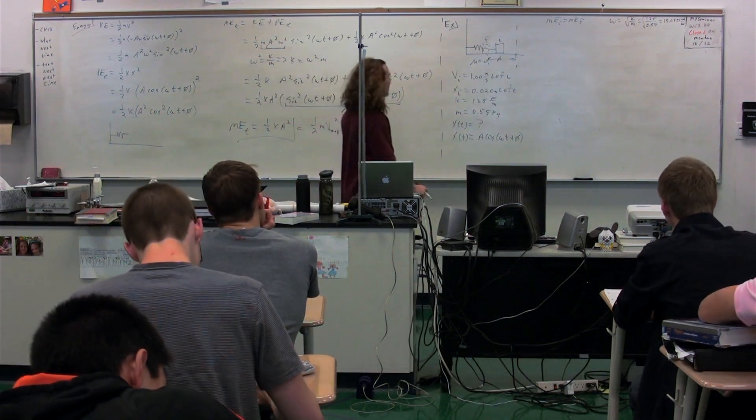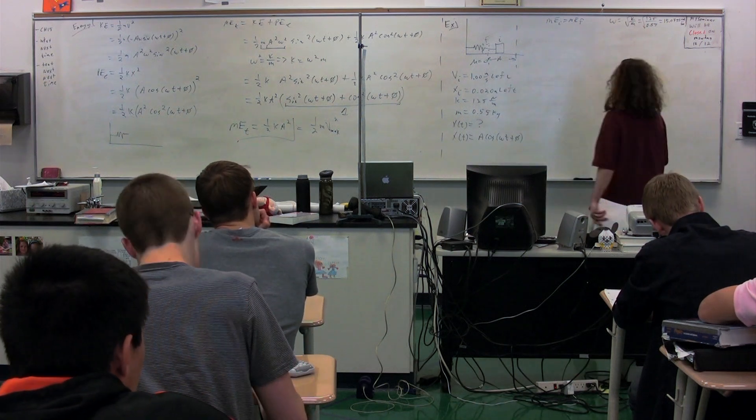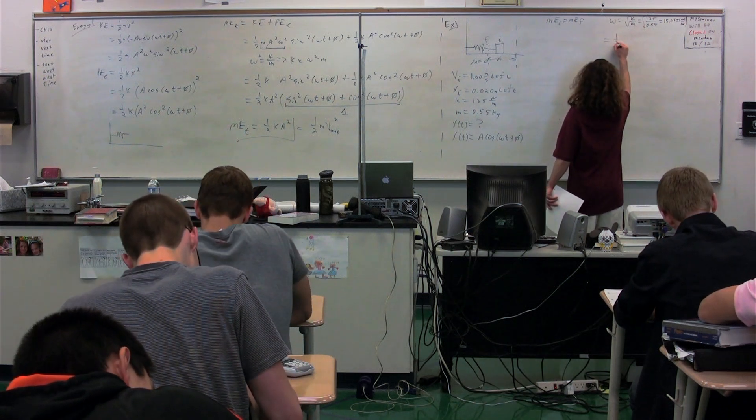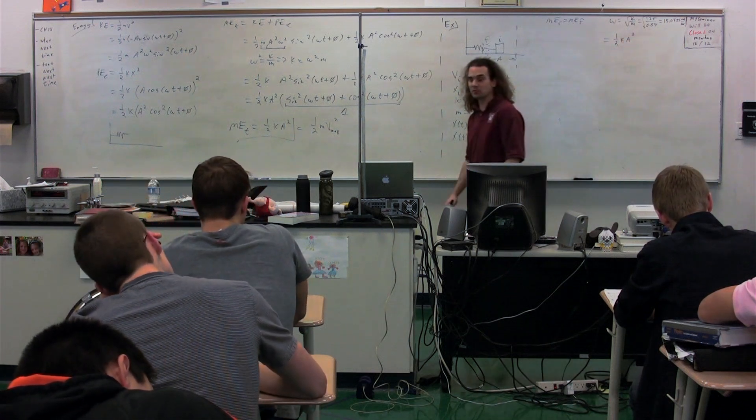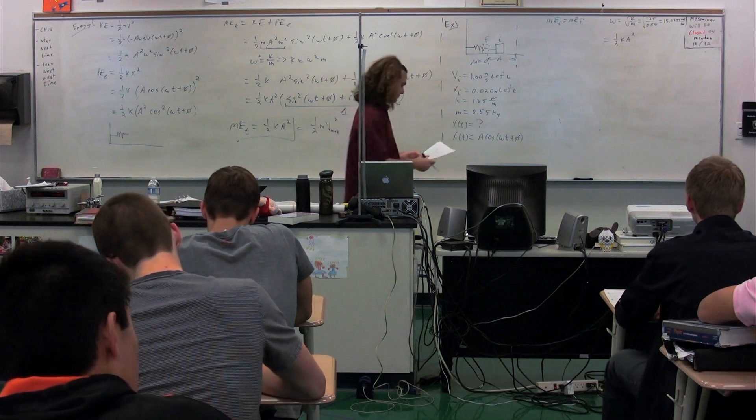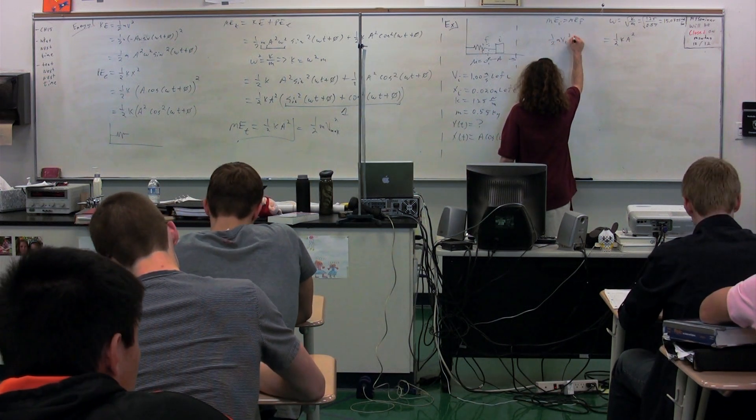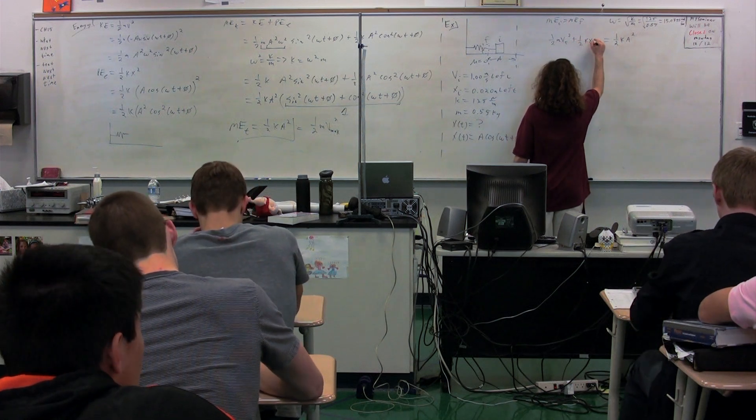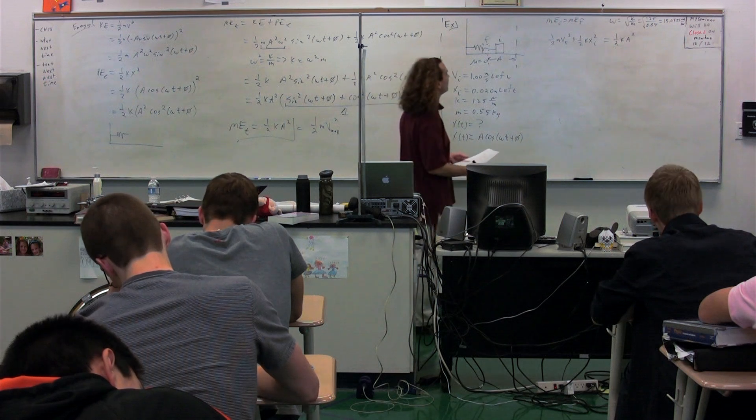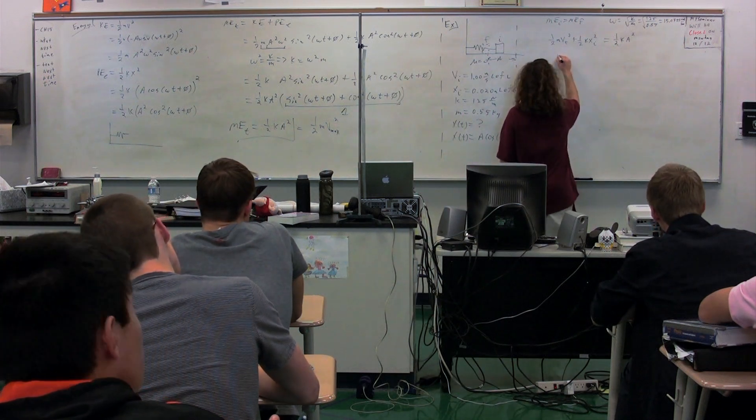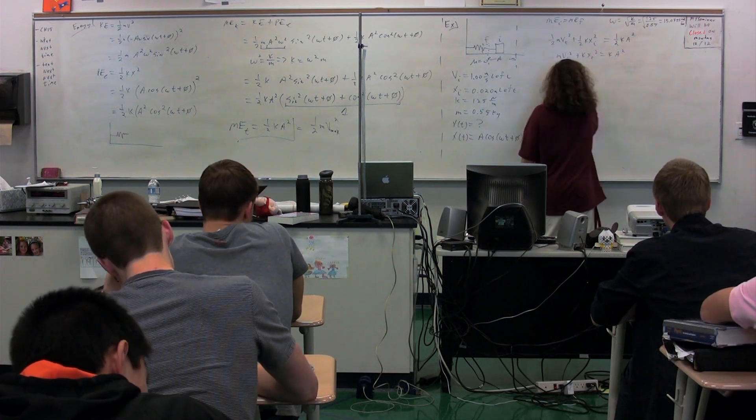Emily, what sort of energy does the object end with? Just the elastic potential energy. It ends with all elastic potential energy, 1 half k A squared, because it's going to be at its amplitude. What does it start with? Kinetic energy and elastic potential. 1 half m v initial squared plus 1 half k x squared initial. So we have all of this information. We just need to solve for A, the amplitude.